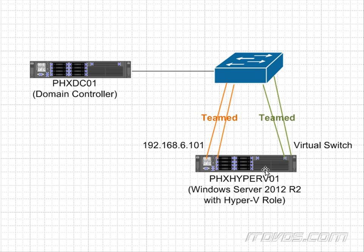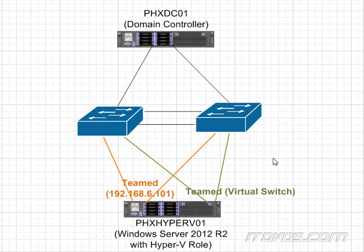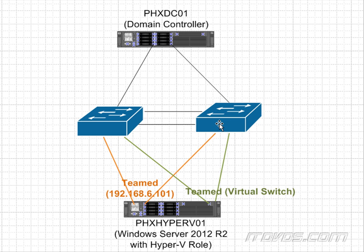We can actually add another switch in a larger environment to create even more redundancy. In this example, we now have two switches with two connections between them. We could also team our domain controller. Instead of connecting both parts of the team to the same switch, we're separating them — the team with the server's IP address connects one NIC to each switch, and the virtual switch team also splits its NICs across both switches. So if one switch went down, the other switch would still be up, and everything would still be functioning.